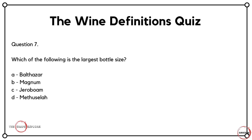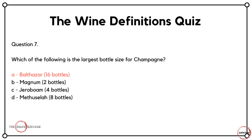Question seven — perhaps one of the easier ones today. Which of the following is the largest bottle size for champagne? Is it A, a Balthazar? Is it B, a Magnum? Is it C, a Jeroboam? Or is it D, a Methuselah? There are of course a number of different bottle sizes. Many of you will know that Magnum is double the size of a regular bottle, so you can probably discount that one. The correct answer is A — a Balthazar is equivalent to 16 regular bottles, making it the largest bottle size for champagne.